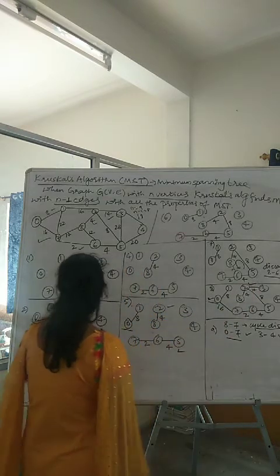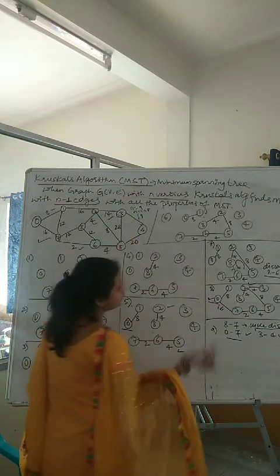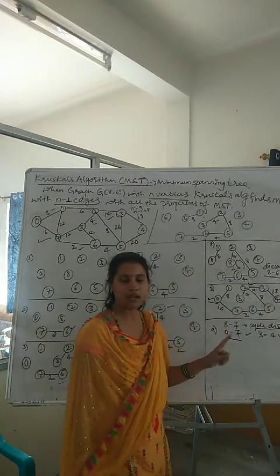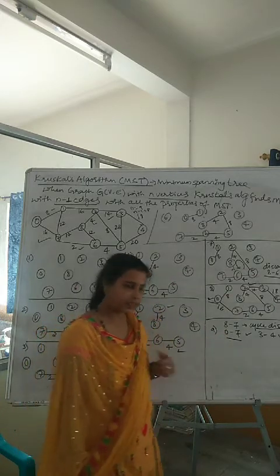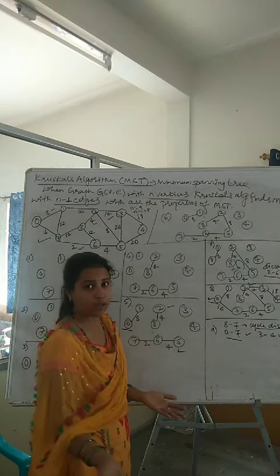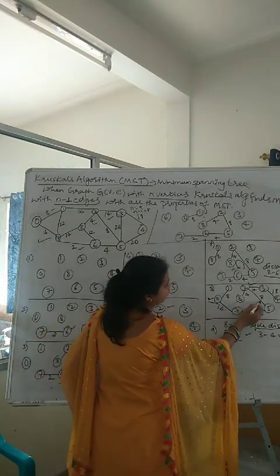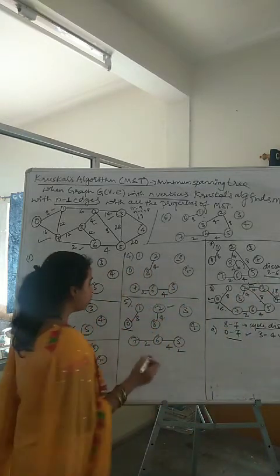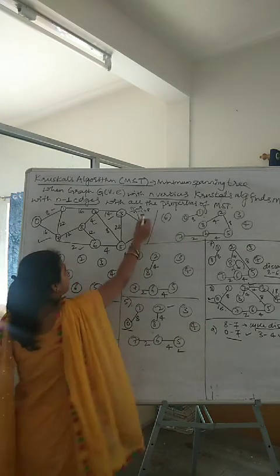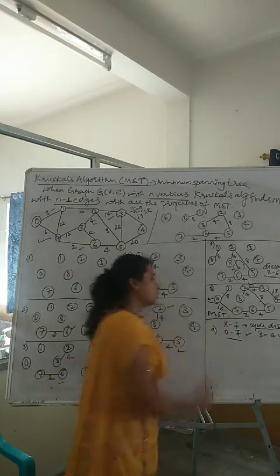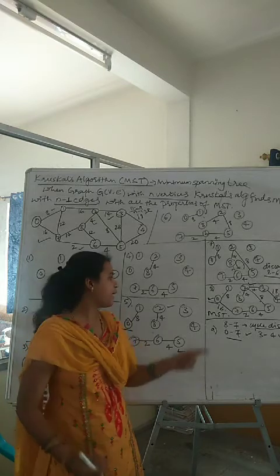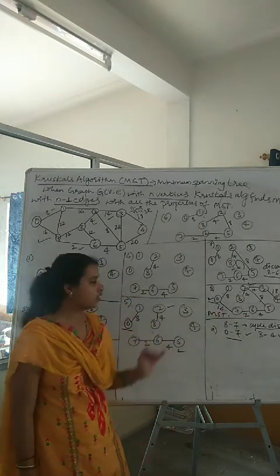Next we consider edge 3 to 4 with cost 18. Is it forming a cycle? No, it is not forming a cycle. So we accept this in the minimum spanning tree. Now let us count how many edges we have considered: 1, 2, 3, 4, 5, 6, 7, 8 — we have 8 edges. With 9 vertices, we need n minus 1 equals 8 edges, so this is the complete minimum spanning tree using Kruskal's algorithm.